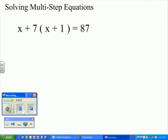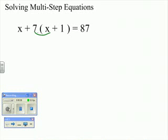Multi-step equation with parentheses. First, multiply 7 by what is in the parentheses.